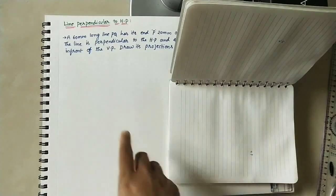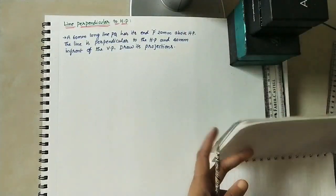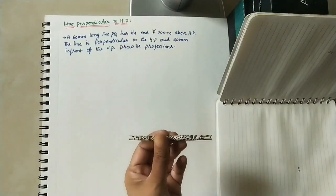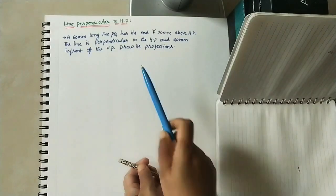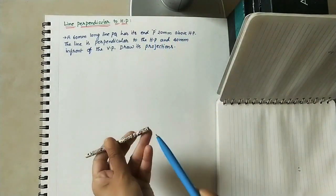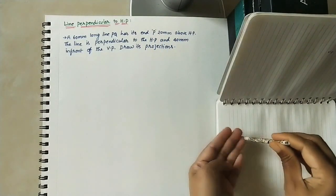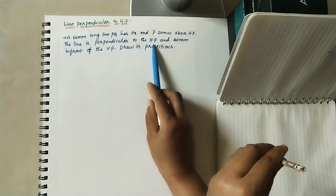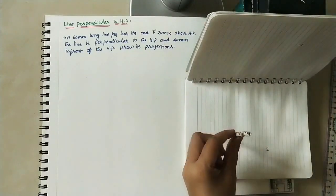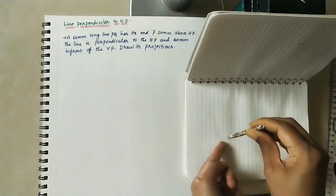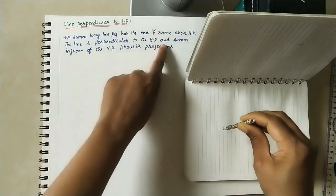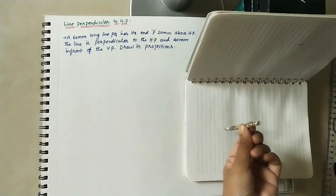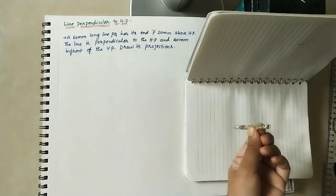Now take the data for marking the projections. The given data: a 60 mm long line PQ. End P is 20 mm above HP — so the gap from the horizontal plane is 20 mm. The line is perpendicular to HP, and it is 40 mm in front of VP.